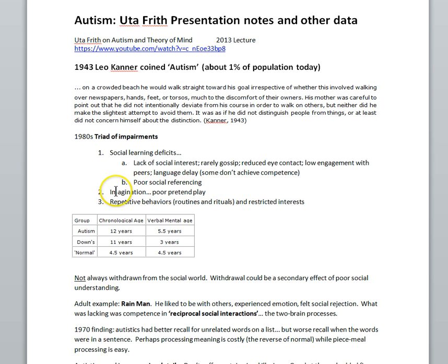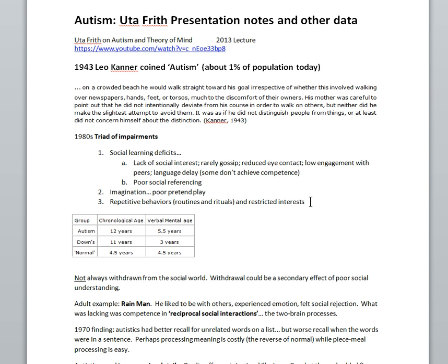The second impairment was in the realm of imagination — autistic children did not do much pretend play. The third was the idea of repetitive behaviors: routines, rituals, and restricted interests. For example, a child might spin a plate and just keep spinning it, seeming intently focused on that particular activity.